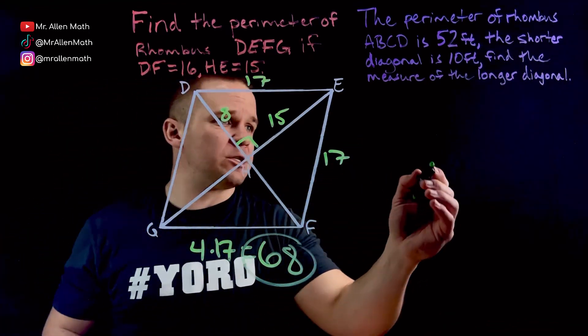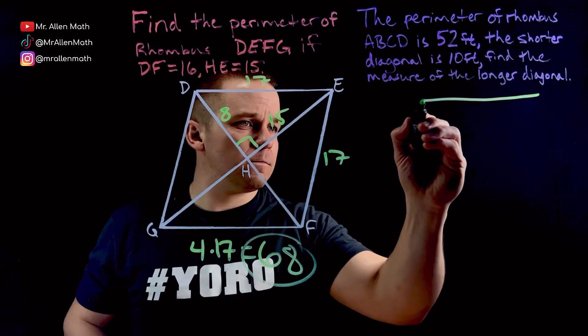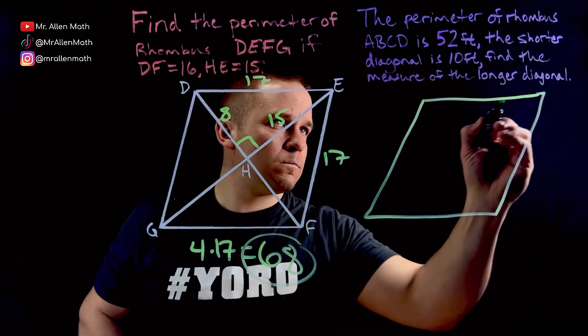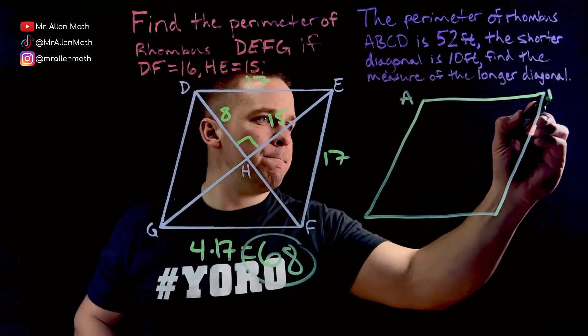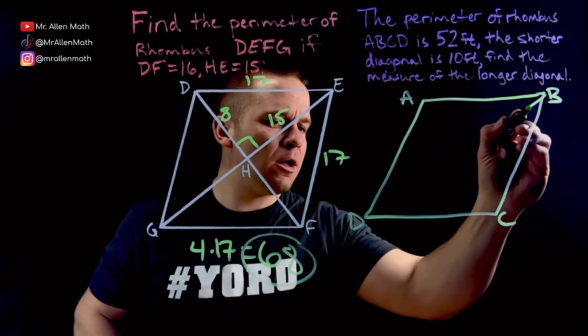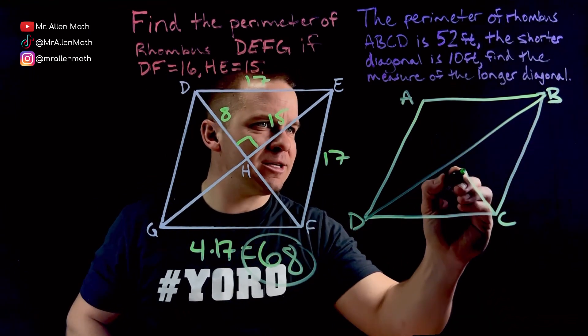So let's draw up something similar to this one here. And I'll label it A, B, C, D. Not as pretty as this one, but it's alright. Gonna get the job done. Throw my diagonal and my diagonal.